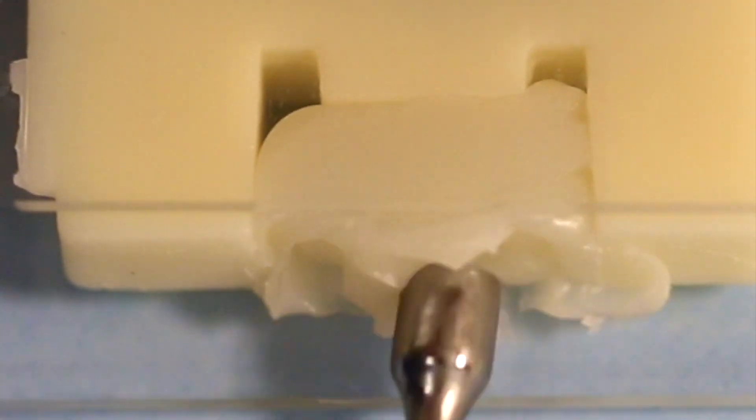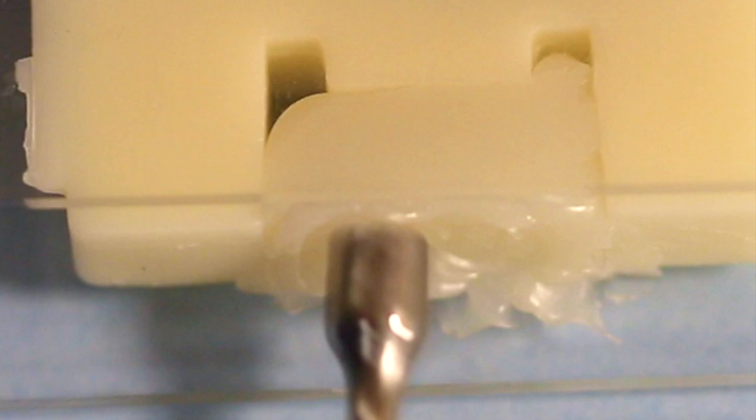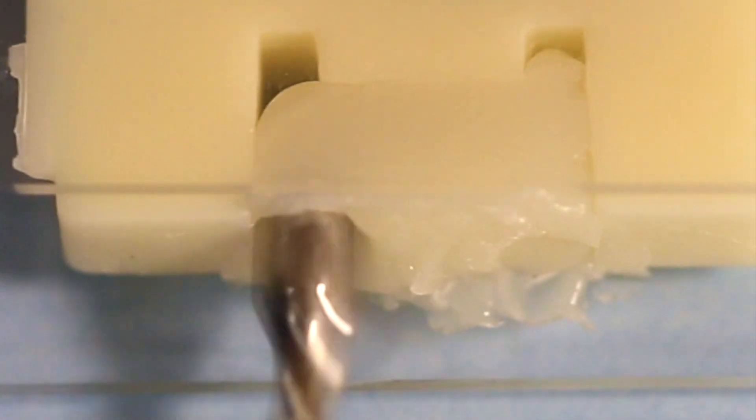And the point I want to make here is that composite, unlike amalgam, cannot be condensed. When you push on it, it just kind of smushes to the side.